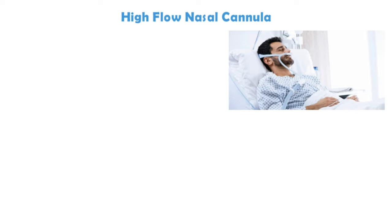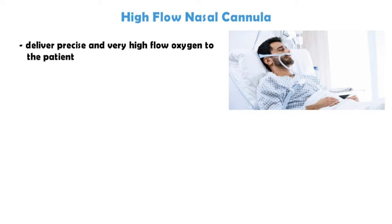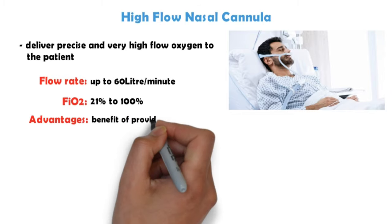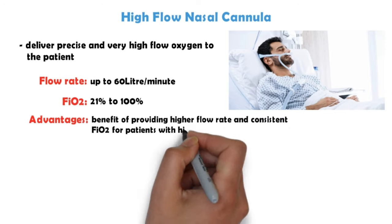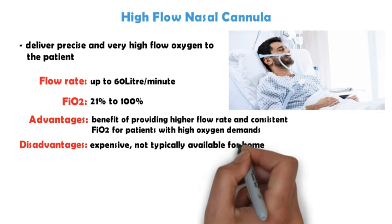High flow nasal cannula — the HFNC is an oxygen delivery system that includes an air-oxygen blender, humidifier, heater, and a nasal cannula to deliver precise and very high flow oxygen to your patient. Flow rate: up to 60 liters per minute. FiO2: 21–100%. Advantages: provides higher flow rate and consistent FiO2 for patients with high oxygen demands. Disadvantages: expensive and not typically available for home use due to the high flow rates.